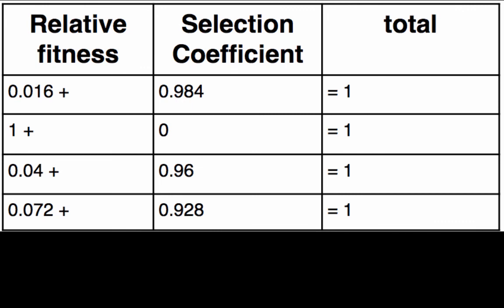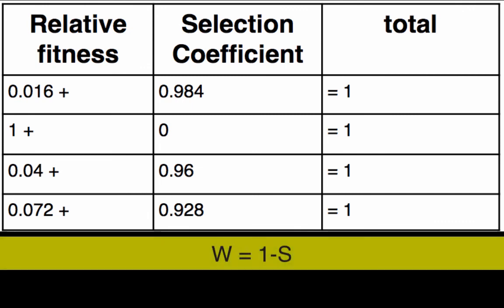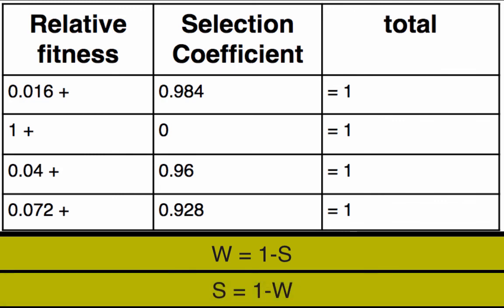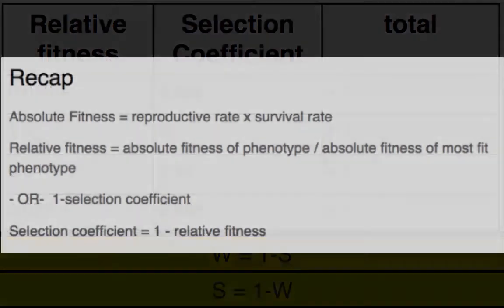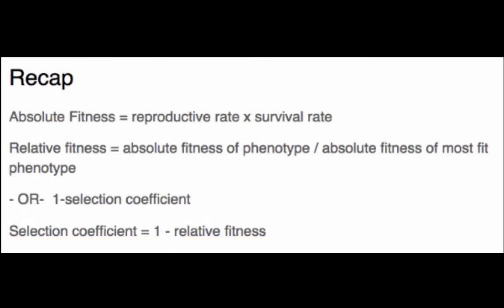That brings us to our next set of equations: W (relative fitness) equals 1 − S (selection coefficient), and S equals 1 − W. As a recap, the concepts we learned about are absolute fitness, relative fitness, and selection coefficient. Hope that was helpful!